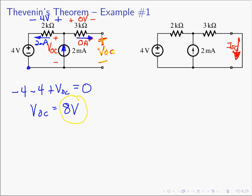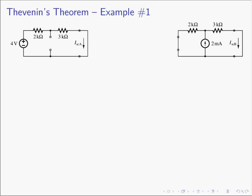To find ISC with R_L shorted, there are various methods — supermesh, nodal analysis — but I'm going to use superposition. Superposition says we can find I_short_circuit by finding the response due to each source acting alone. We'll redraw the circuit into two cases: first, kill the current source and just have the 4 volt voltage source. With the current source open, it's very straightforward — there's only one current flowing around the loop. The current is 4 volts divided by 2kΩ and 3kΩ in series, so I_SC_A equals 0.8 milliamps.